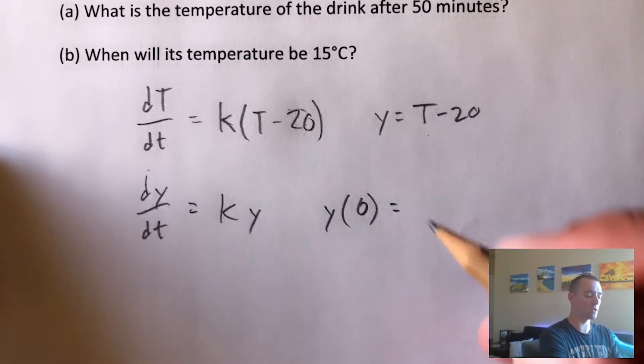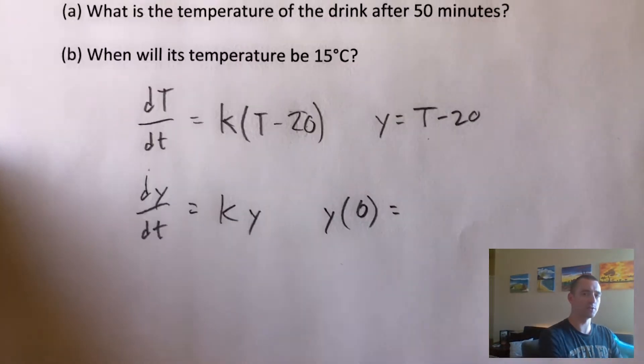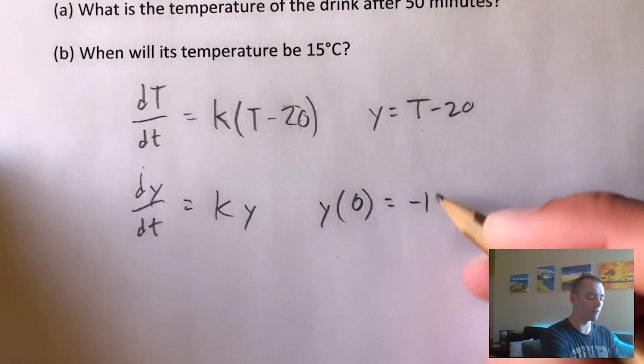And we would get five minus 20, which is negative 15. So when our time is zero, when zero time has elapsed, our y is going to be negative 15.